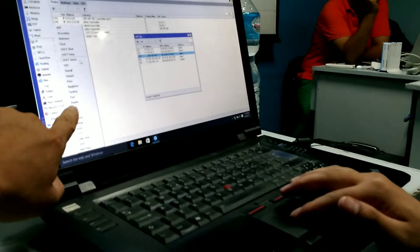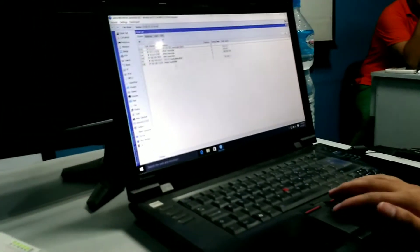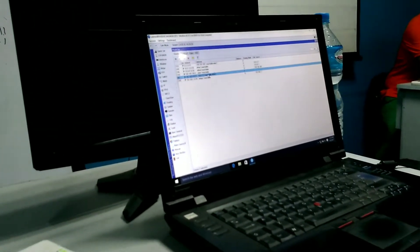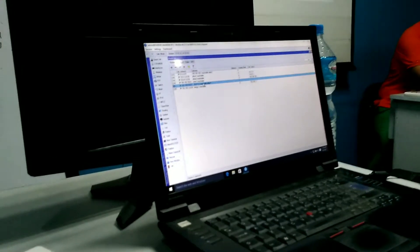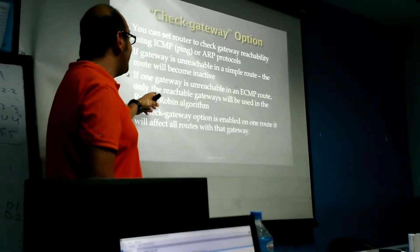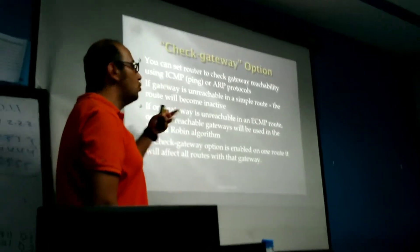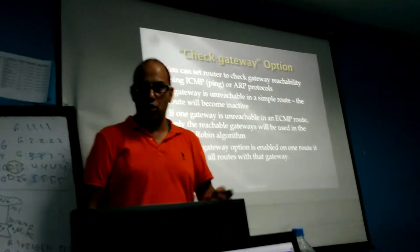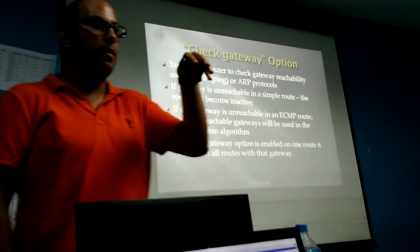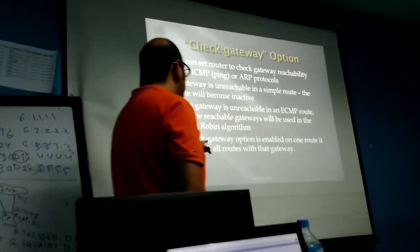It checks the reachability of the gateway every 10 seconds. With the second failure, the reachable gateways will be used in the round robin algorithm. So no worries if some of your gateways in ECMP goes down if the check gateway option is enabled.